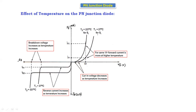Looking at the forward bias characteristics, for the same forward voltage VF, the forward current is more at higher temperature. At a common forward voltage point, for 27°C the current IF1 is less, while at 227°C the forward current is greater. So for the same VF, the forward current is more at higher temperature. These are the differences in forward bias when temperature increases from 27°C to 227°C.